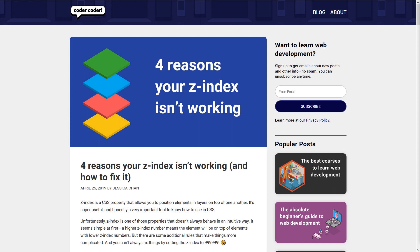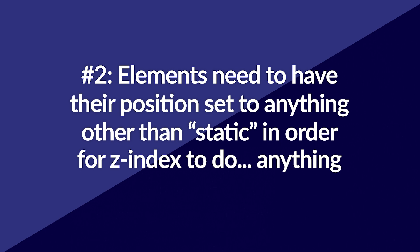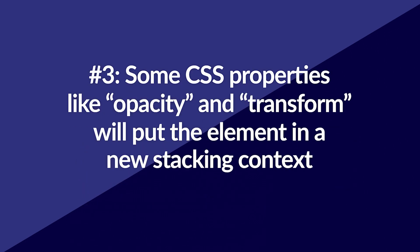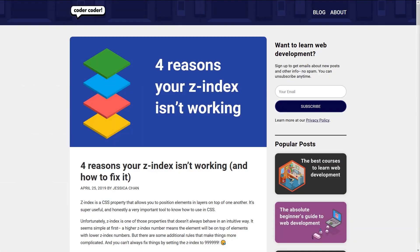This quirkiness in working with z-index trips up a lot of developers. So in today's tutorial, we'll be going over four reasons z-index isn't working and the solutions to each one, with real code examples. The four reasons are: number one, elements in the same stacking context will display in order of appearance, with latter elements on top of former elements. Number two, elements need to have their position set to anything other than static in order for z-index to do anything. Number three, some CSS properties like opacity and transform will put the element in a new, oftentimes unexpected stacking context. And number four, the element's z-index may be unintentionally limited by its parent's z-index value. Let's take a closer look at each of these four z-index problems. If you'd like to read the blog post version of this tutorial, it's linked down in the description below.